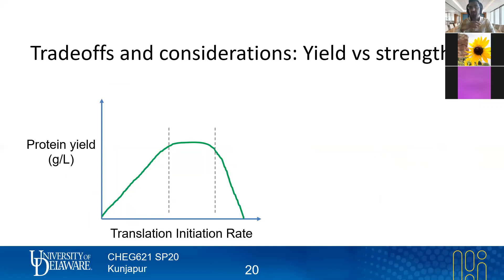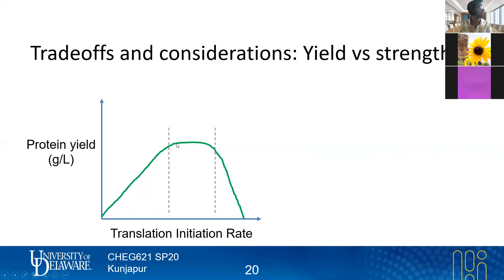We've really just been talking about how you can pump up or boost protein expression. But a better way of thinking about it is that there are trade-offs, and one such trade-off involves too much protein. When we think about protein yield versus translation initiation rate or expression strength, we can imagine a curve that goes up to some extent, maybe steadies out, and then could precipitously decline. This isn't necessarily true for every protein, but it's what we'd expect for most.